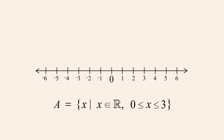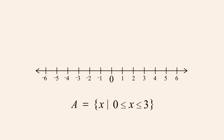In this case, the universal set is the set of all real numbers. Since it is understood that all numbers illustrated by the number line are real, we can omit this from our set definition. Zero and three are the least and greatest numbers in set A, so we place solid dots at those points on the number line. Since set A also contains all real numbers between zero and three, we draw a solid line between the two endpoints.